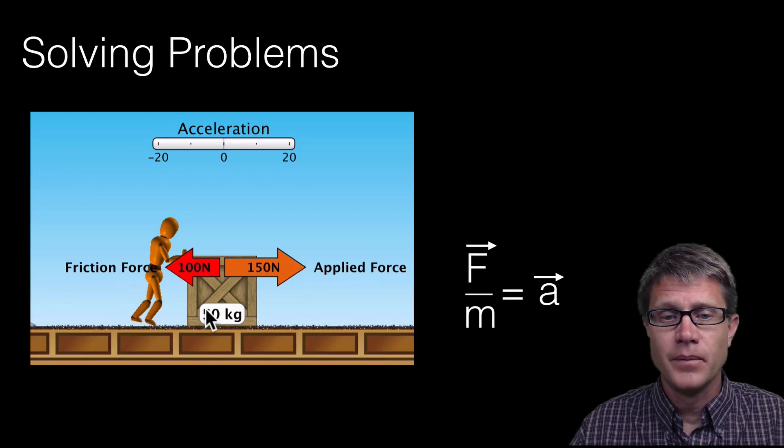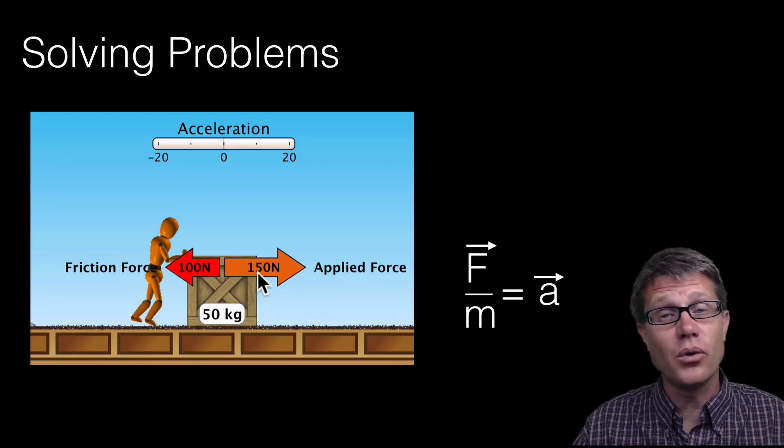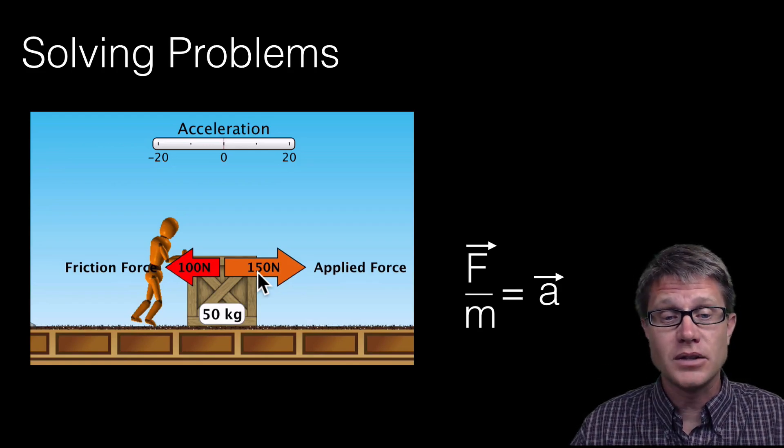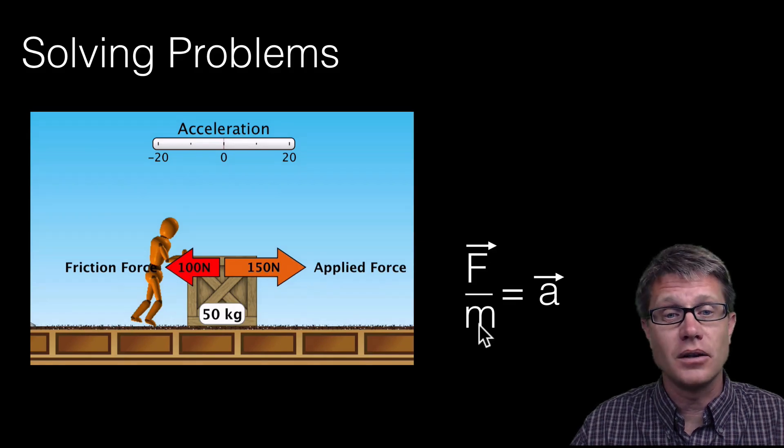Well you are going to use Newton's second law. So we are going to rearrange it like this. What is my net force? Well we have 150 newtons to the right, 100 newtons to the left. So we are going to have a 50 newton force pushing in the right. What is my mass? It is 50. So again it is 50 over 50 or we are going to have an acceleration of 1.